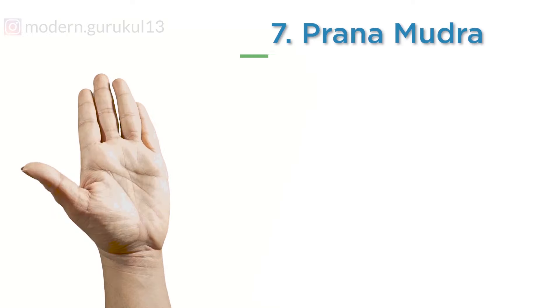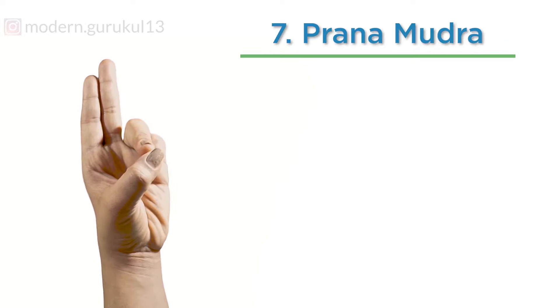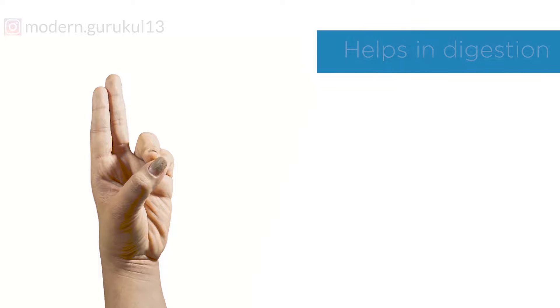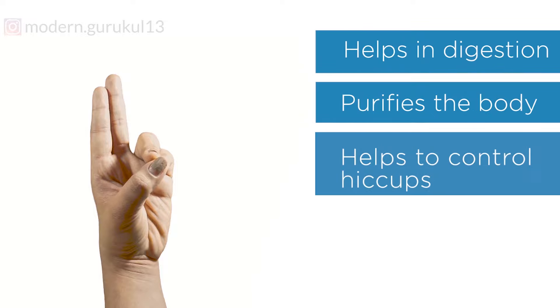Prana Mudra: The tip of the ring finger and little finger touches the tip of the thumb. Other fingers are pointing outwards. Prana Mudra helps in digestion. It purifies the body and also helps to control hiccups.